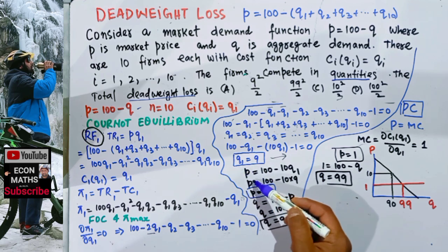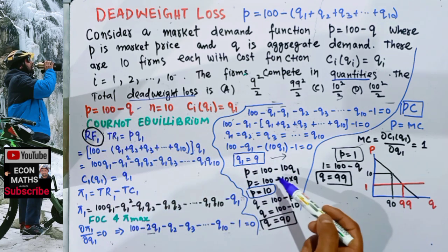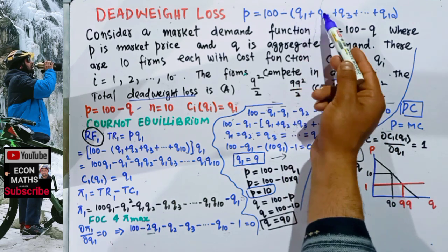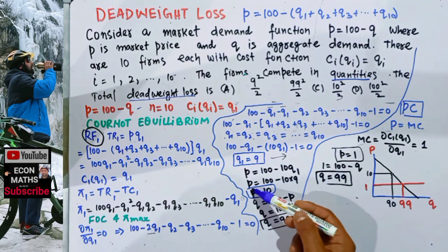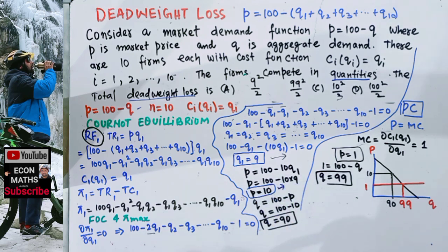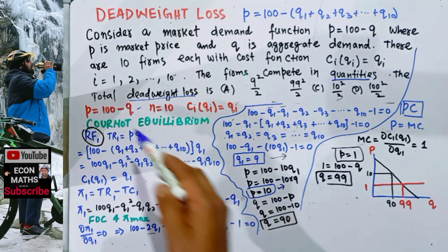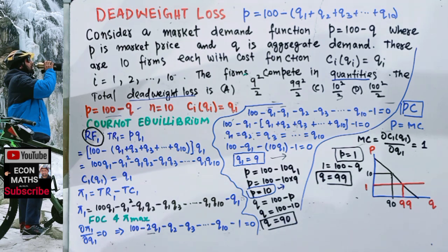Since all firms produce the same quantity, total output Q = 10 × Q1 = 10 × 9 = 90. To find the Cournot price, we plug Q = 90 into the demand function: P = 100 - 90 = 10. So in Cournot competition, the price is 10 and total quantity produced is 90.